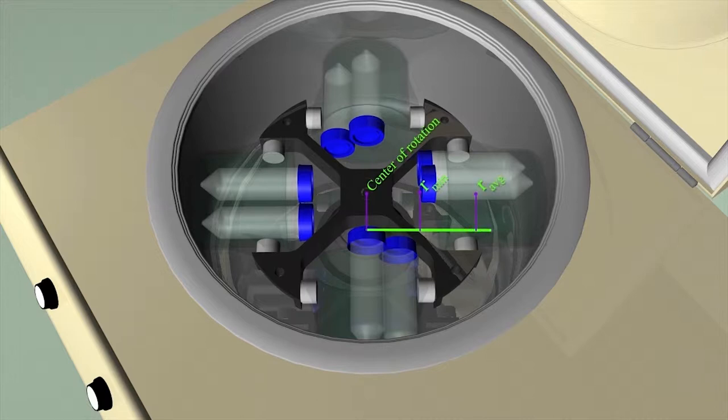We consider the maximum radius to be at the bottom of the tube. We'll call this value r sub max. The value at the top of the tube is referred to as r min for minimum force, and in the middle we see r sub average for average force.